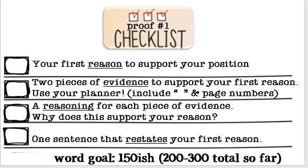For each piece of evidence, you need a sentence that explains the reasoning — in other words, use your own words to explain why that piece of evidence supports your reason. The last sentence of this paragraph restates your first reason, wrapping it up by reminding the reader what reason you just discussed. For this paragraph you should have about 150 words, which will put your paper at 200 to 300 words total so far.